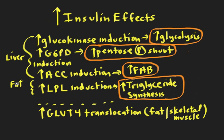In the fat cell, the endothelial lining of blood vessels has an enzyme induced by insulin called lipoprotein lipase. This enzyme cleaves triglyceride-rich particles — like chylomicrons from a meal or VLDL secreted by the liver — releases fatty acids, which are taken up into the fat cell and re-stored as triglyceride. This fits with the idea that insulin promotes fat storage.